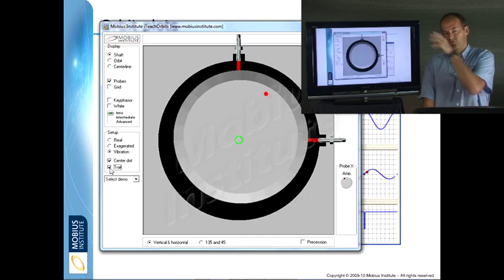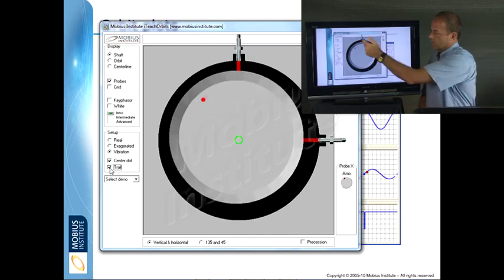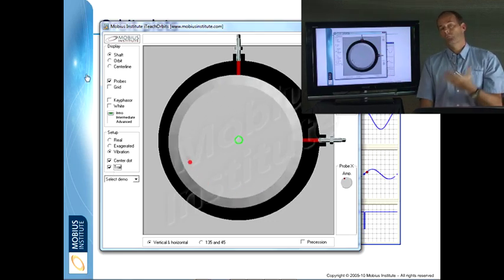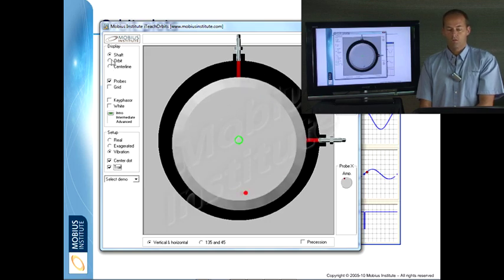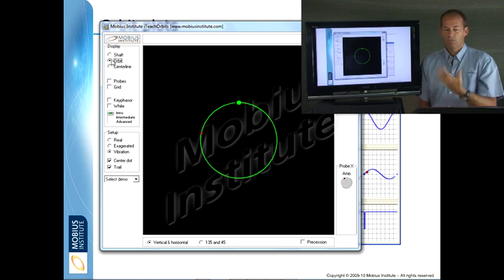So now you can see it has left a trail behind it. And it is showing how the centre of the shaft is moving from one moment to the next. And instead of trying to visualise the centre of the shaft, if we actually use these two dynamic voltage signals and plot them against each other, like X versus Y, we get an orbit plot.